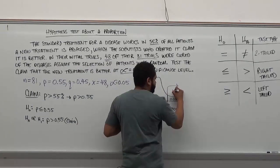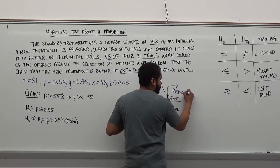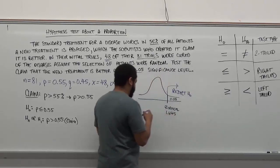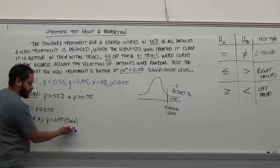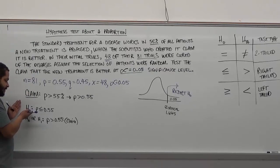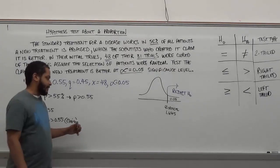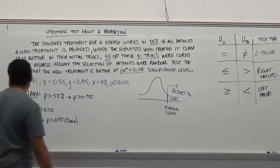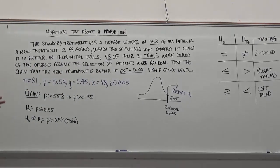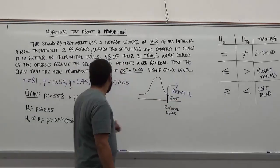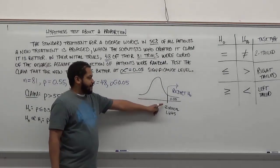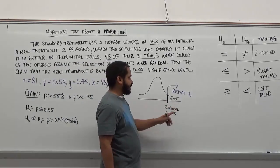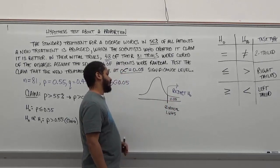Rejection and fail-to-reject decisions always correspond to H₀, not Hₐ. Rejecting the null hypothesis means we support the alternative. Failing to reject the null means we do not support the alternative. If our test statistic falls before the z-critical value of 1.645, we fail to reject the null; if it falls after, we reject the null.